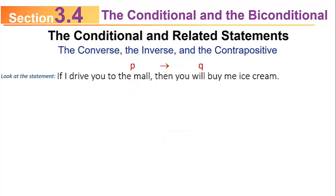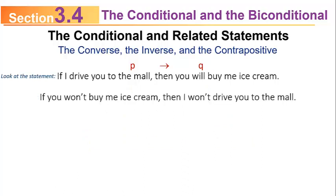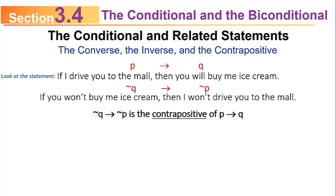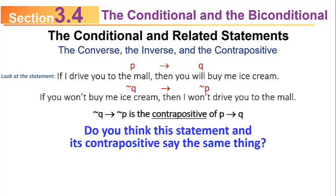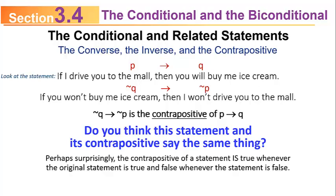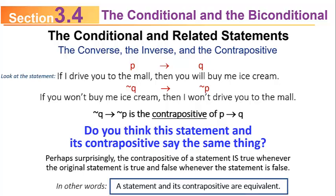Go back to the original: if I drive you to the mall, then you will buy me ice cream. Now consider: if you won't buy me ice cream, then I won't drive you to the mall. Notice that you've negated both P and Q and switched them — that's the contrapositive. Do the statement and the contrapositive say the same thing? My guess is you would say no, but surprisingly, that is not the case. The contrapositive is true whenever the original statement is true, and false whenever it is false.